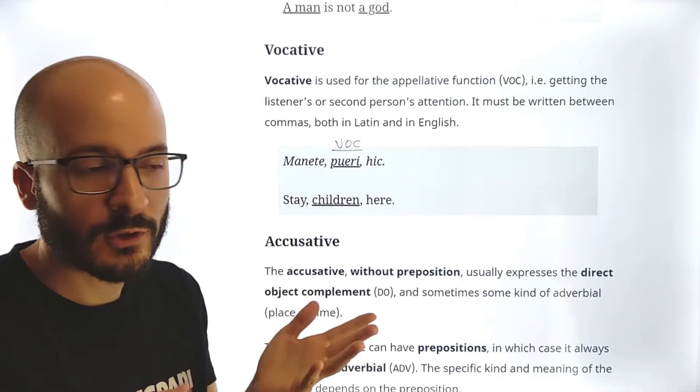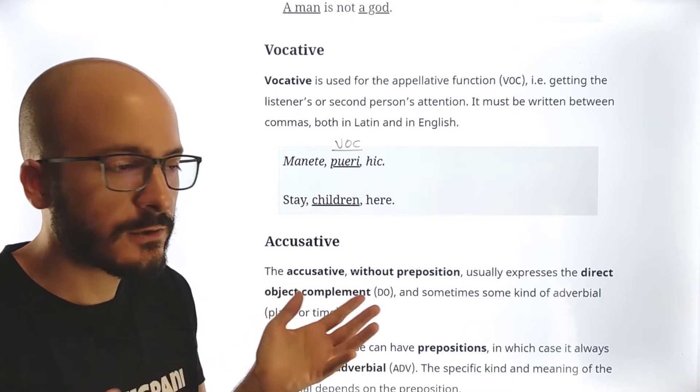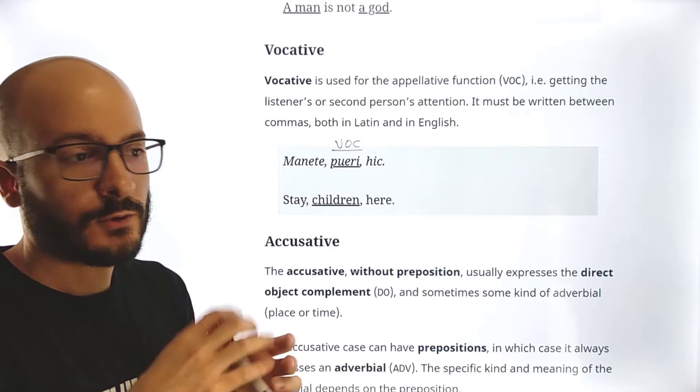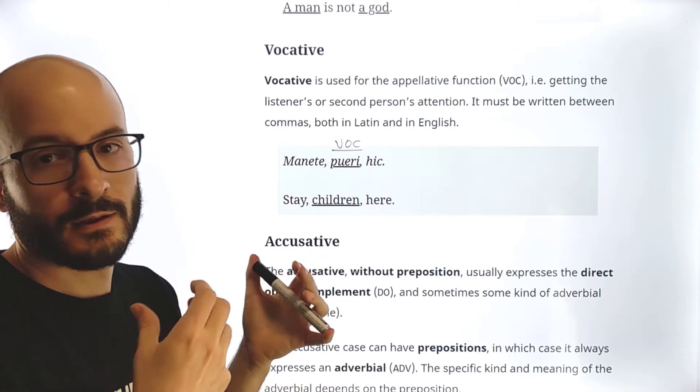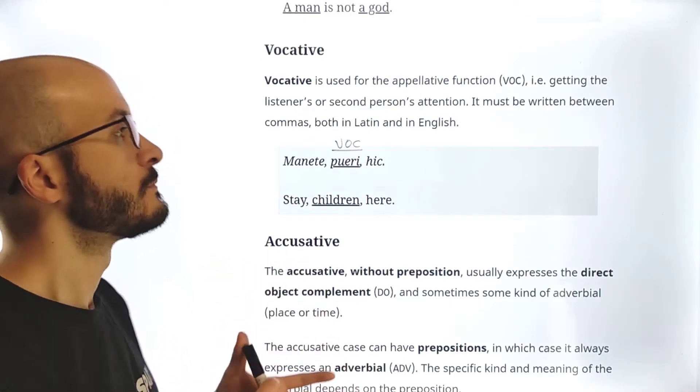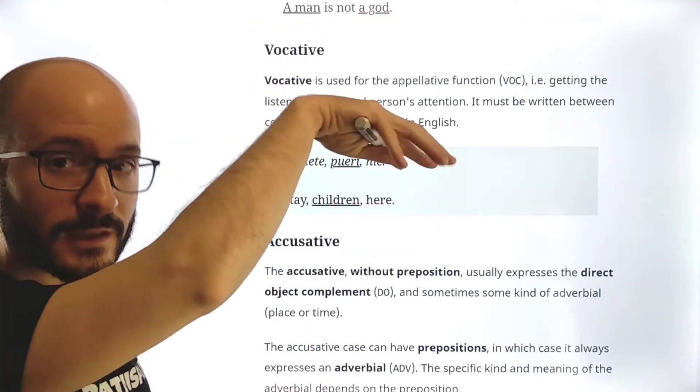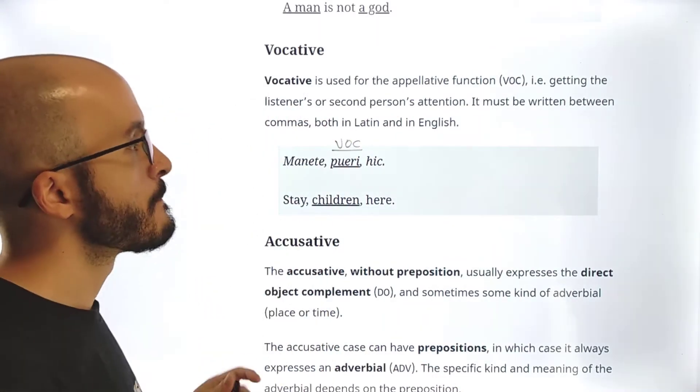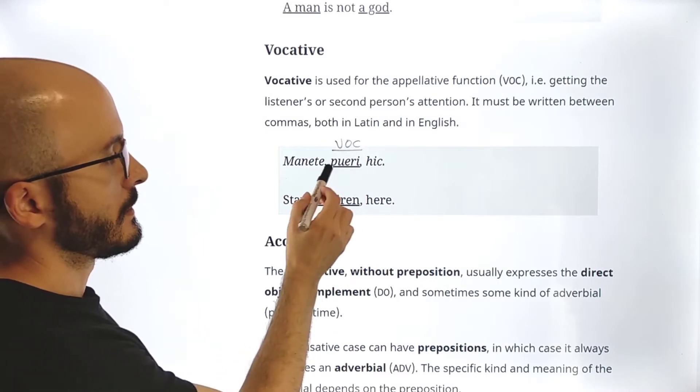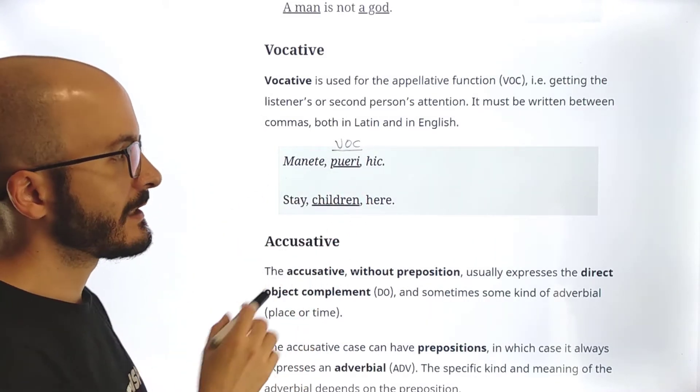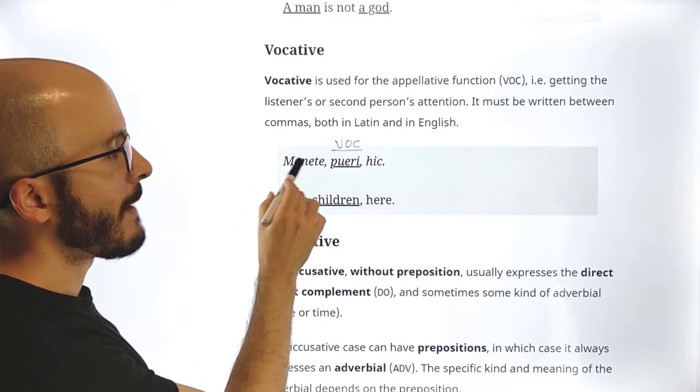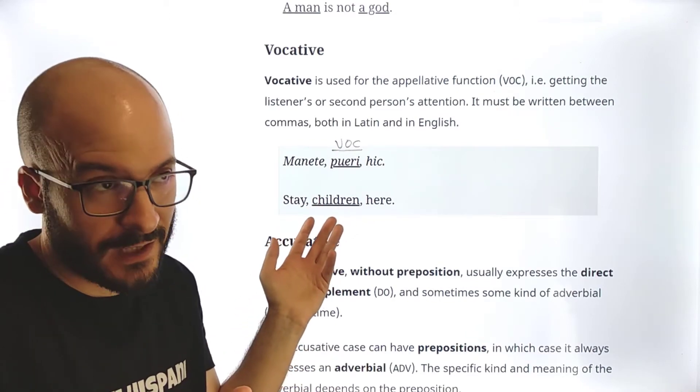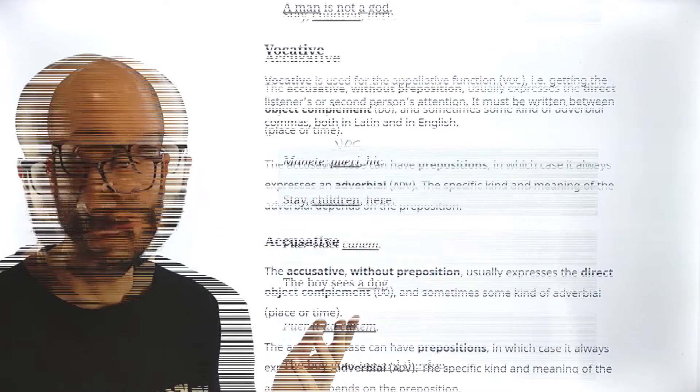And always my example is the same. We are in some place drinking beer or something, and we want to call the attention. We want to get the attention from the waiter. So we say, hey, waiter, whatever. And that's, hey, waiter. If we say waiter, then that's vocative. It must be written between commas. So we see here, both in Latin and English. For example, manete pueri. It's like stay children here. Of course, this in English is kind of artificial, but it's just like an example.